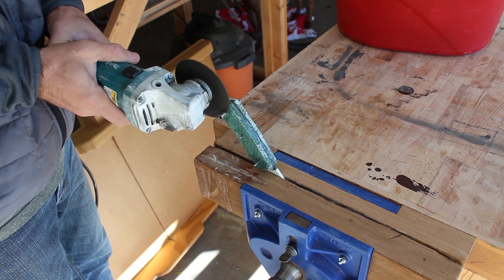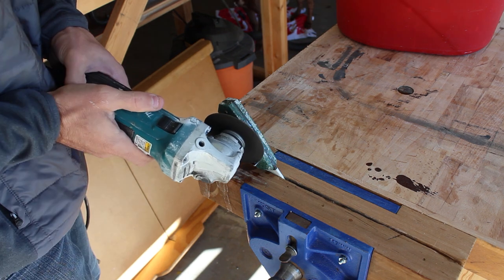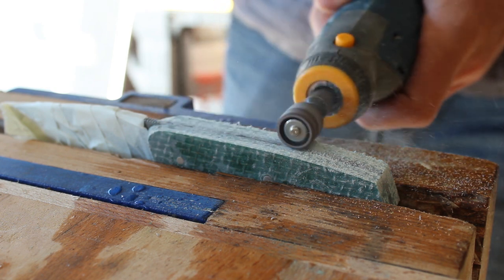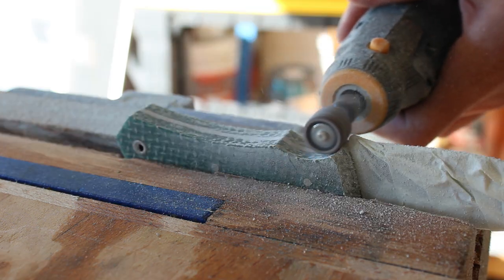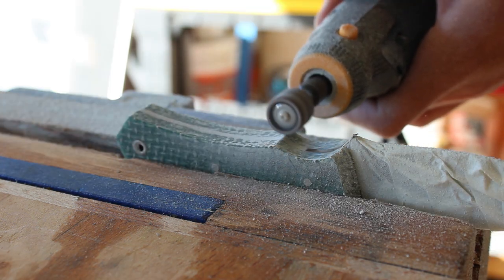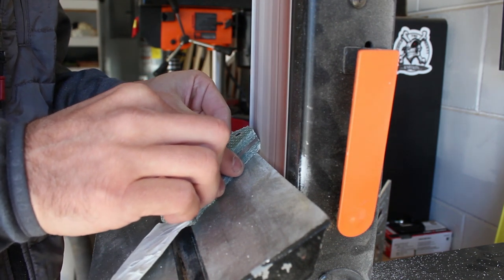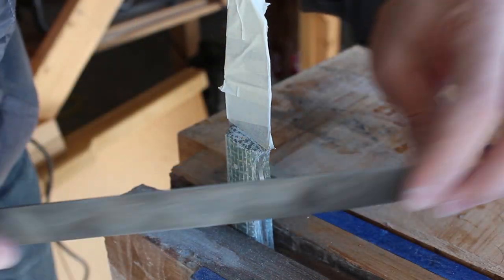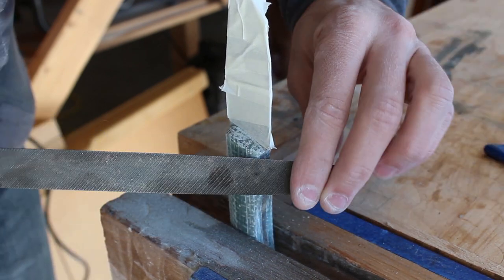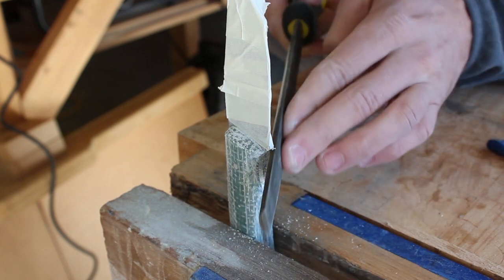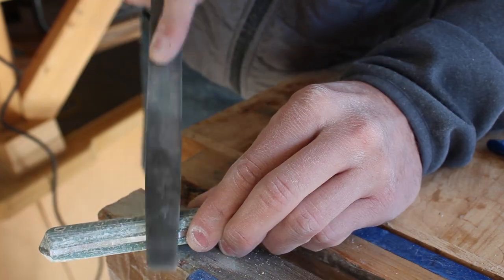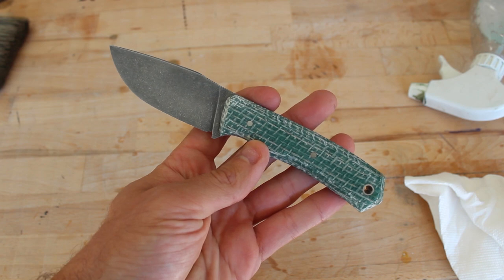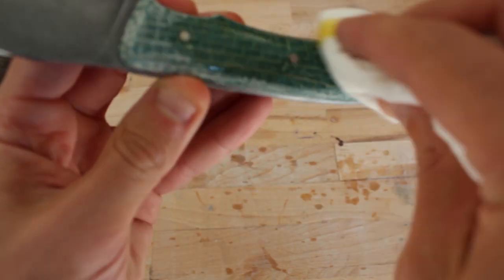Now I'll grind off the pins and shape the handle. For the finish on the knife scales I'll be using boiled linseed oil.